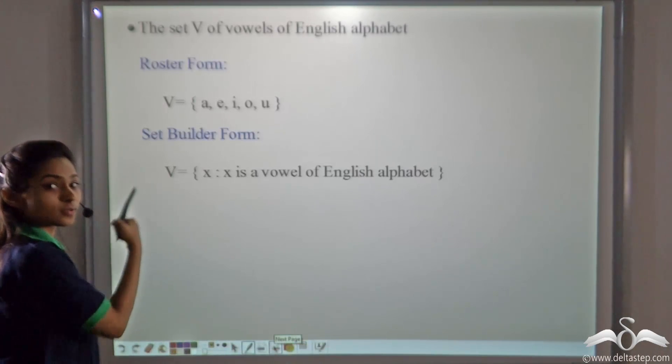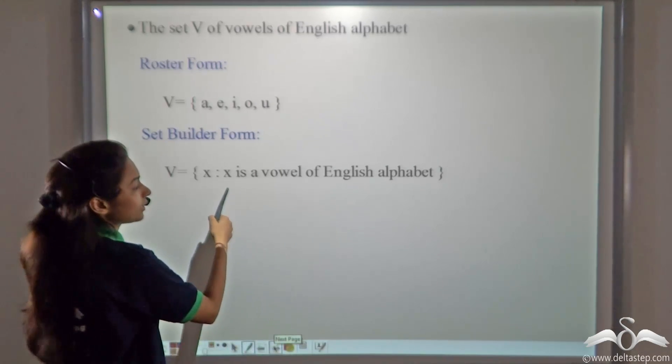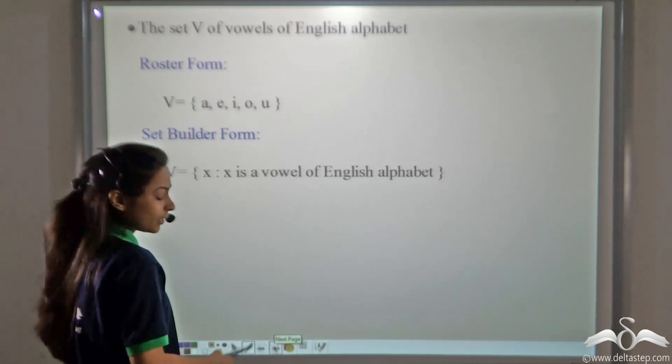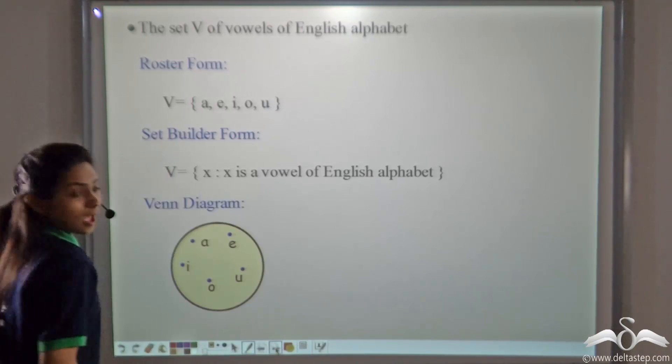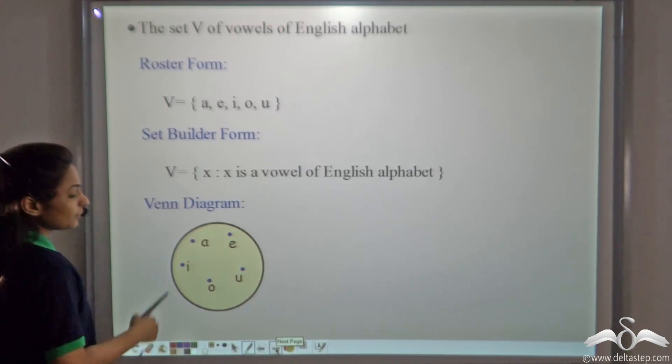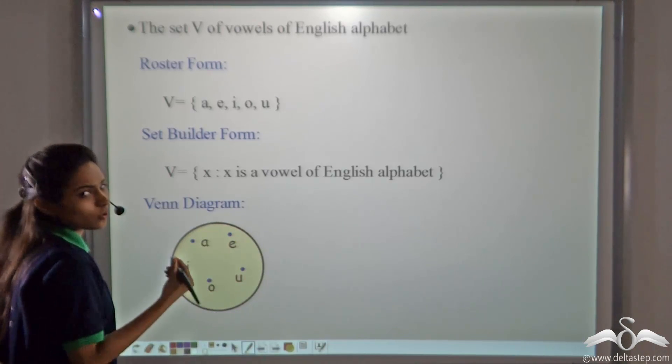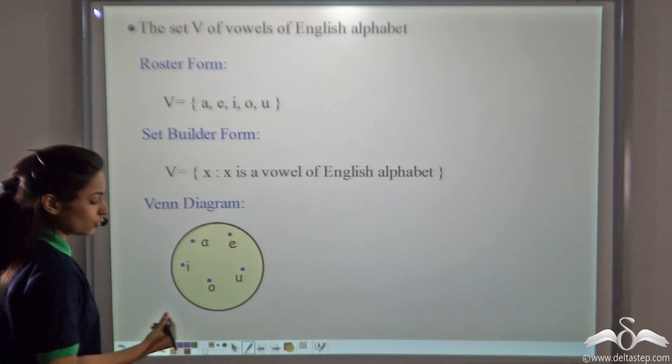Now in set builder form, we will use the variable X and list the property of X, that is X is a vowel of English alphabet. Now in Venn diagram, we will make the diagram, say the circle, and we will list it with points. You can list it with points or without points, whichever way you like.